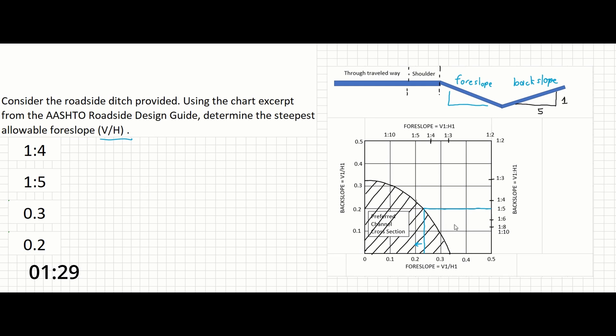You will notice that technically 1 colon 5 is the same slope as 0.2, but the problem asks for units of V slash H, so we will pick 0.2 instead.